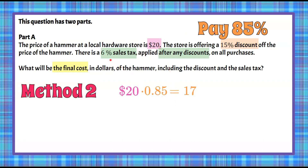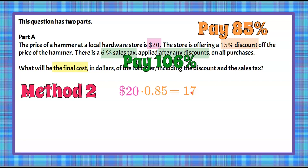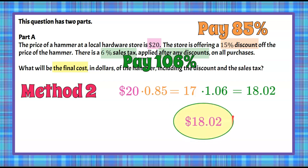Now we have our sales tax to add onto the $17. We're paying the $17 plus 6%, which we can think of as paying 106% — 100% of the $17 plus 6%. So we multiply 17 by 1.06, and on your calculator you get $18.02, just as we did with Method 1 but with a little less math. The final cost of the hammer including the discount and the sales tax is $18.02.